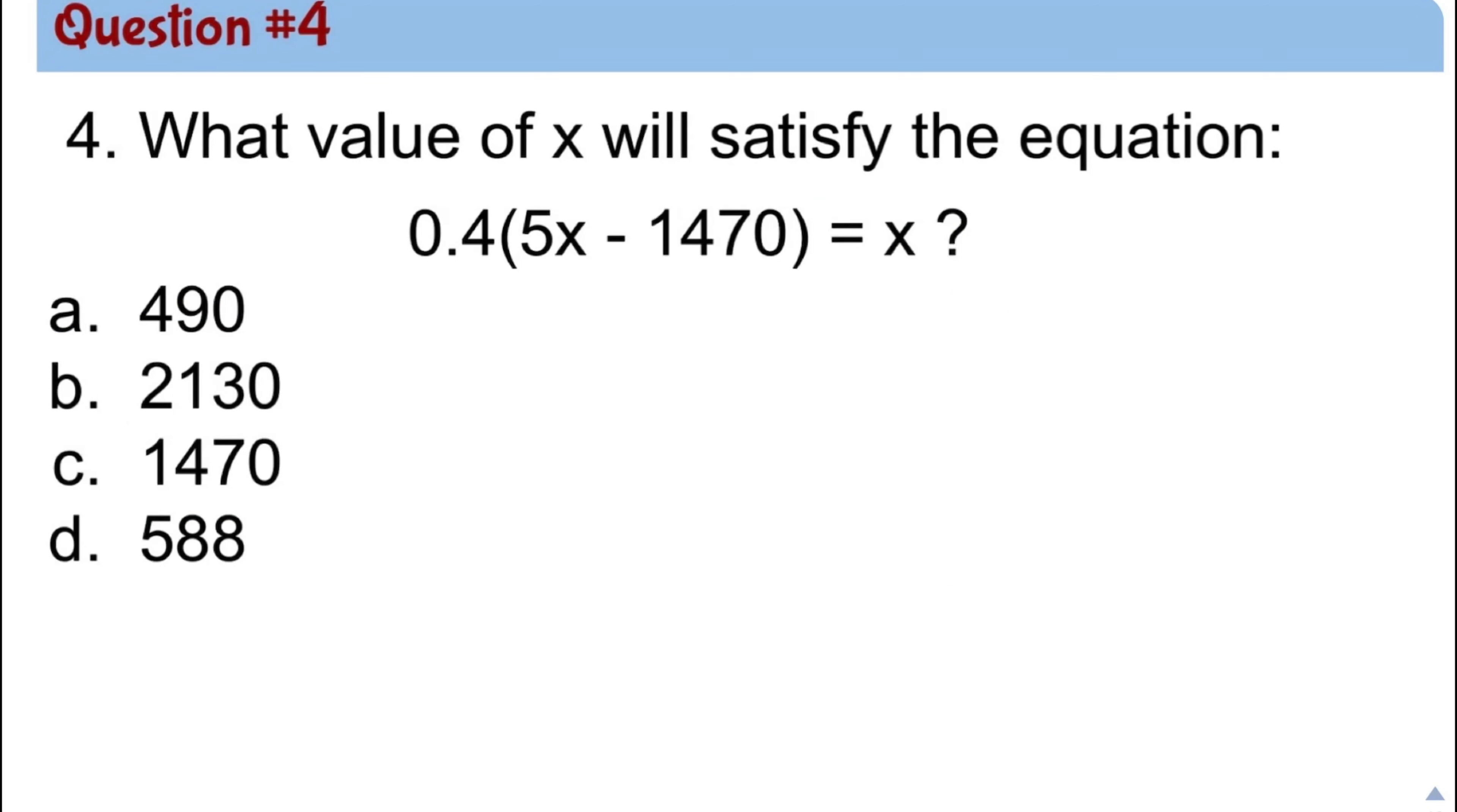Question number 4. What value of x will satisfy the equation below? Again, this is the type of question that you can't eliminate choices. So in this problem, the first thing that we need to do is distribute property. We need to do 0.4 times 5x, 0.4 times 1470. And then we're going to solve for the x value. So 4 times 5 is 20, but there's a decimal point, so this becomes 2x. Now we need to multiply 1470 times 0.4. So 4 times 0 is 0. 4 times 7, 28. Carry 2. 4 times 4, 16. Plus 2, 18. Carry 1 again. 4 times 1 is 4. Plus 1 is 5. And there's one decimal place, so we have 588.